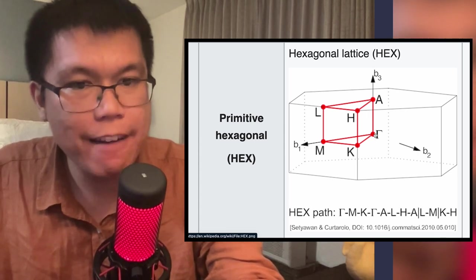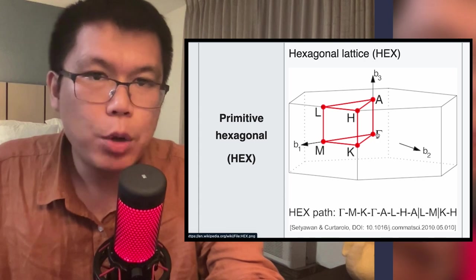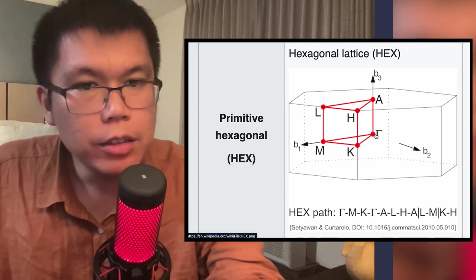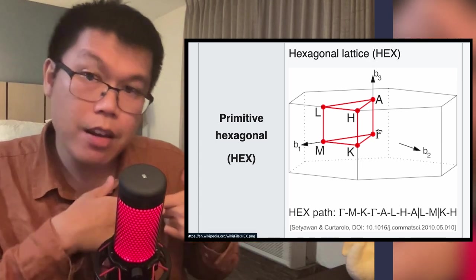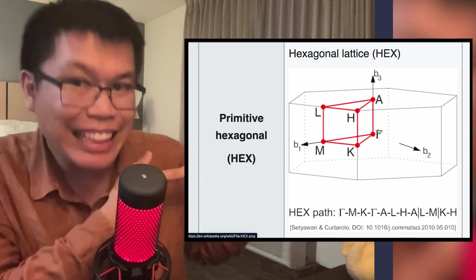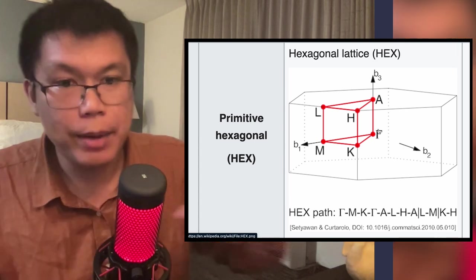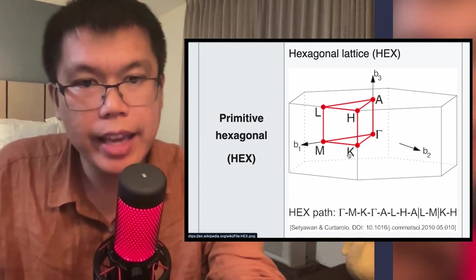So from this point, we have what we call the gamma. What we're going to do is we're going to move from the gamma to the M to the K back to the gamma. So we have this triangular path that we want to see what the electrons are going to do as you move along that path. It's going to move from gamma to M to K back to gamma.